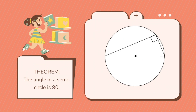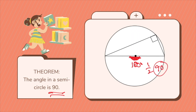Now let's move to the next theorem: the angle in a semicircle is 90 degrees. Since this is a straight line, its measurement is 180. Going back to the last theorem — the angle at the center is twice the angle at the circumference — since half of 180 is 90, therefore the angle at the circumference will be 90 degrees, so the angle in a semicircle is 90 degrees.